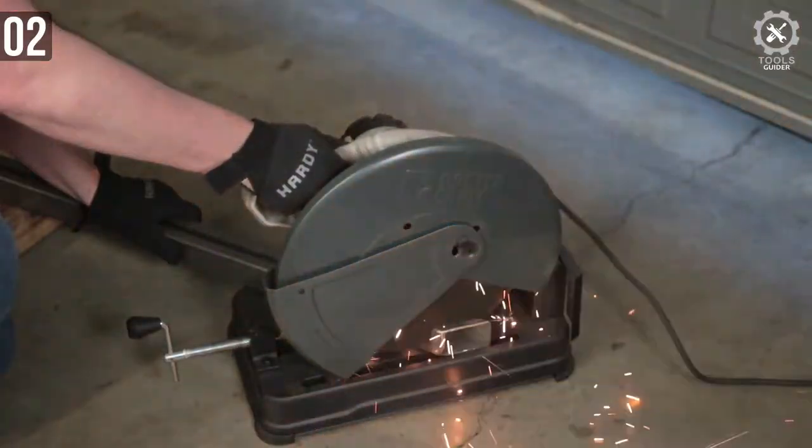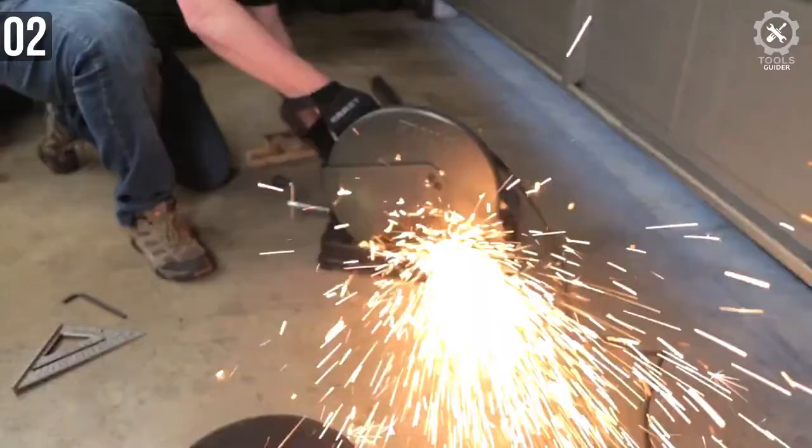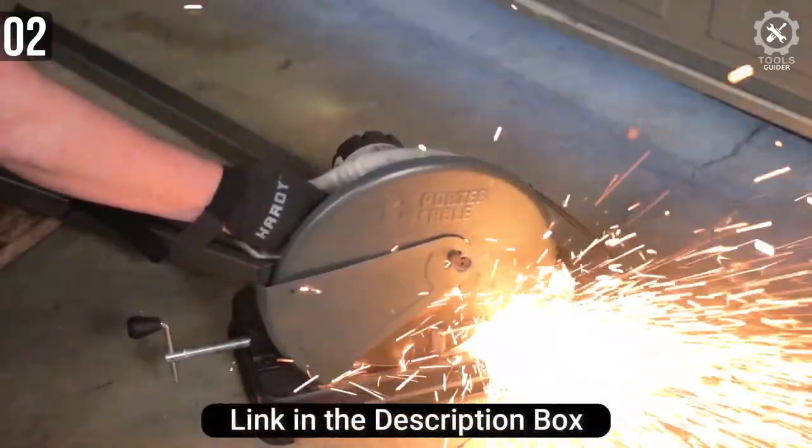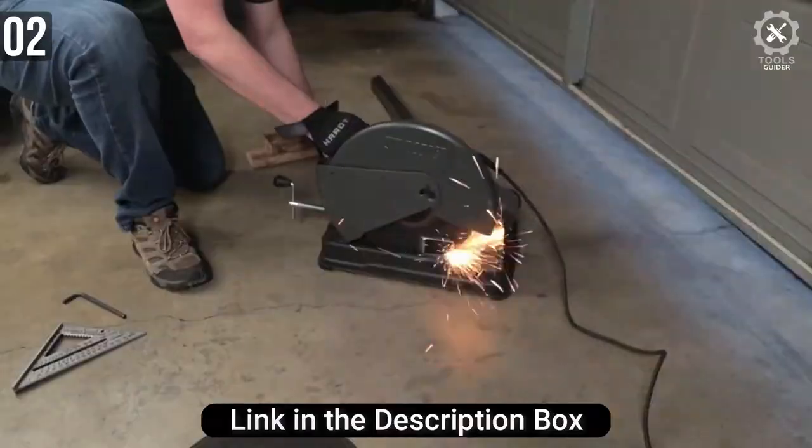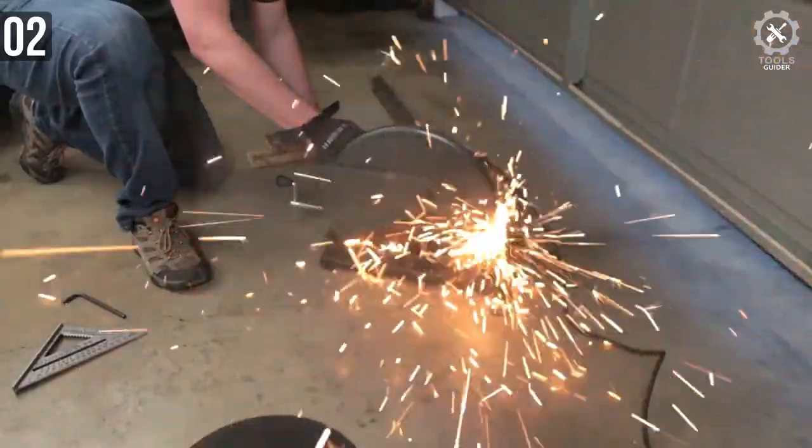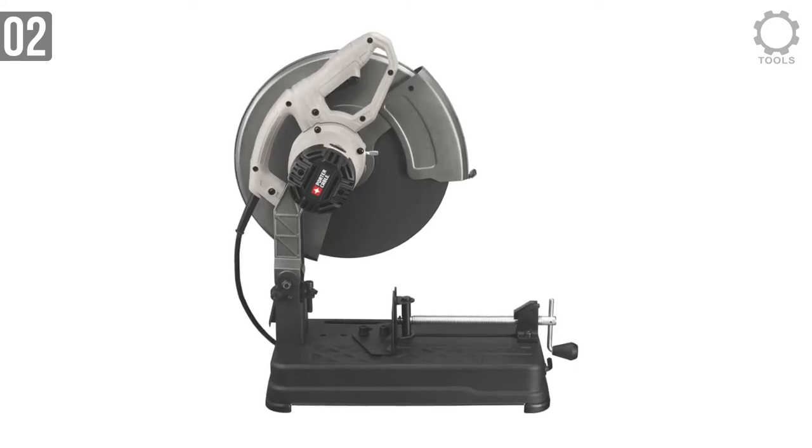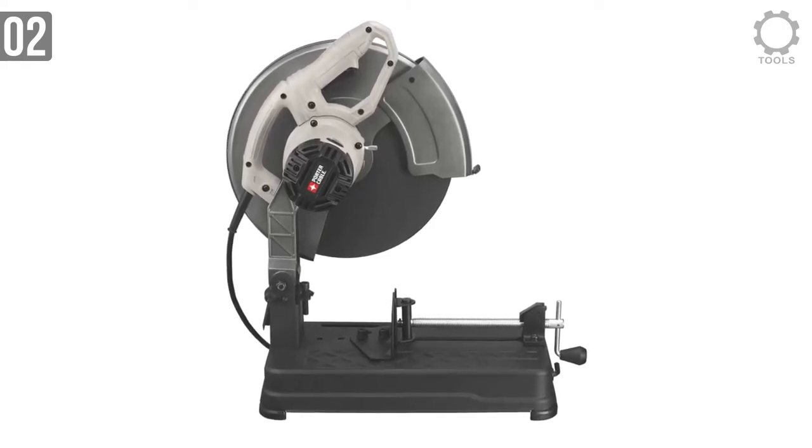Porter Cable's PC-S700 Chop Saw is present in the second position in this article as it offers excellent value for money. Even though it has a highly affordable price tag, you get a 14-inch cutting blade in it. This blade is powered by a 15-amp motor that is able to offer a high rotation speed of 3,800 rpm.